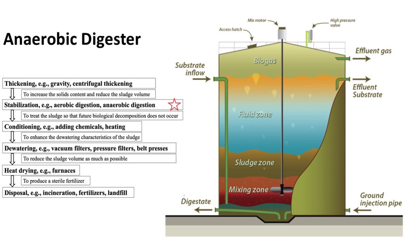Anaerobic digestion is a widely used process in wastewater treatment plants to manage and stabilize sludge. It involves the biological degradation of organic material in the absence of oxygen, resulting in significant volume reduction, stabilization of sludge, and the generation of biogas. This multi-benefit process contributes to sustainable sludge management by addressing key challenges such as odor control, pathogen reduction, and energy recovery.